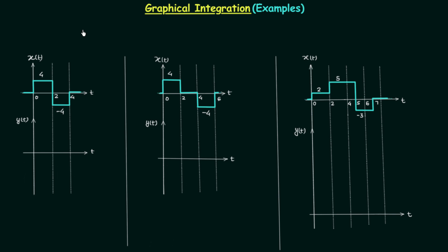In this lecture we will perform the graphical integration of three signal waveforms. Graphical integration is applicable only for signal waveforms which are constituted of rectangular pulses. In all three cases we only have rectangular pulses and the signal is equal to zero otherwise, so we can use graphical integration to find signal yt.